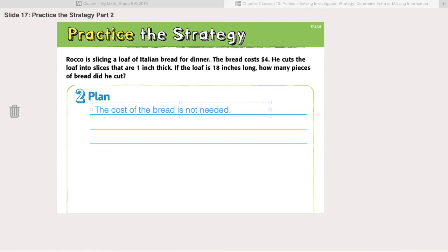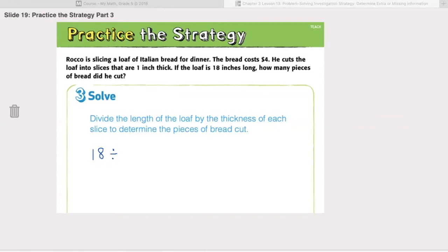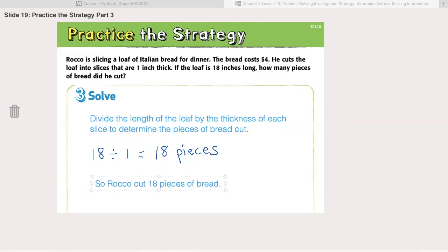Let's go to step three. To solve, we're going to divide the length of the loaf by the thickness of each slice to determine the slices of bread cut, the pieces of bread cut. So we know that the length of the loaf is 18, and we know that he cuts the loaf into slices that are one inch thick. So there will be 18 pieces. So Rocco cut 18 pieces of bread.